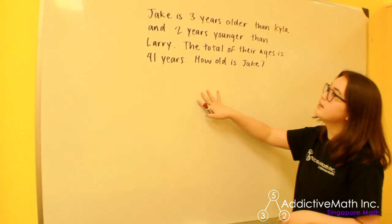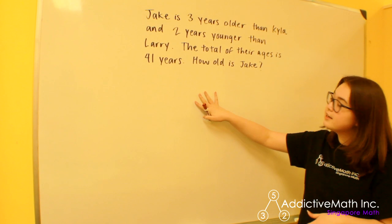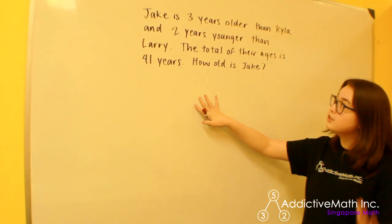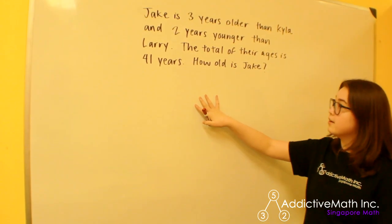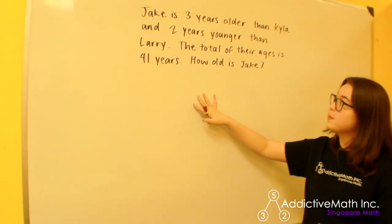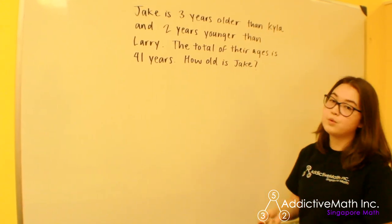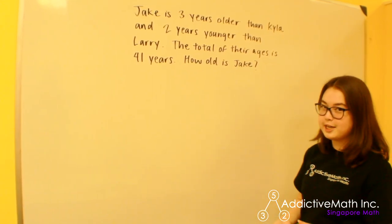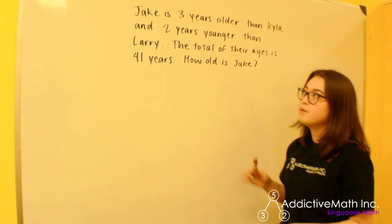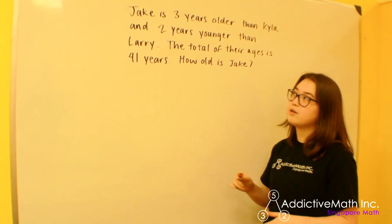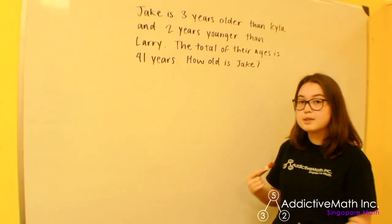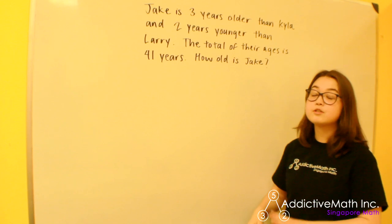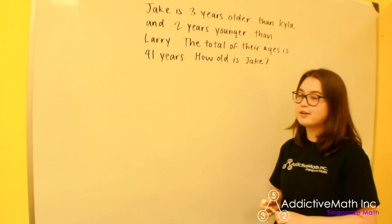We have a problem here and it says that Jake is 3 years older than Kyla and 2 years younger than Larry. The total of their ages is 41 years. How old is Jake? Now we can solve this algebraically, but we can also work this with our model, which is geared towards younger students or more visual learners.